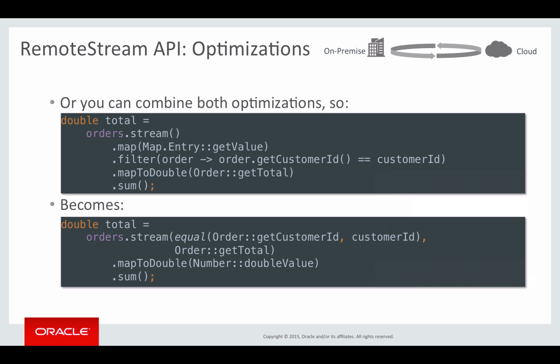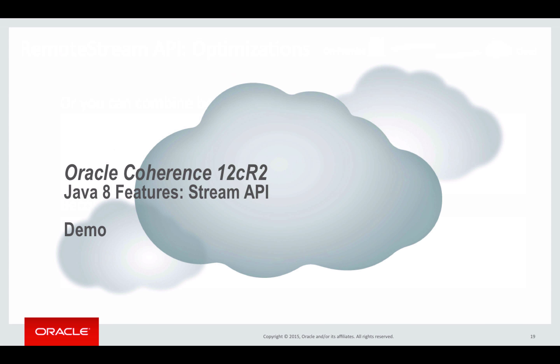Finally, you can combine both optimizations — specify both a filter to narrow down the scope of the operation and an extractor to perform the mapping when creating the stream. With indexes on both order.getCustomerId() and order.getTotal(), this should give you amazing performance regardless of the number of orders in the cache. Let's go to the demo and see what kind of impact you can get by using indexes and Coherence stream API optimizations properly.